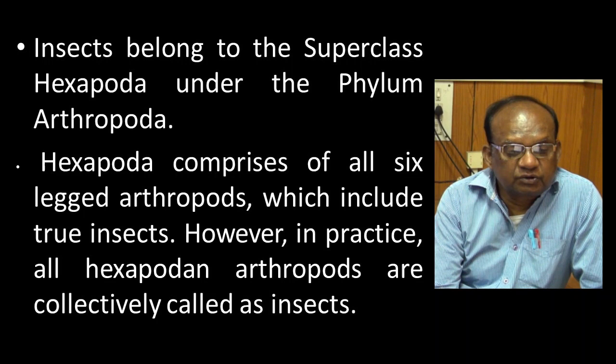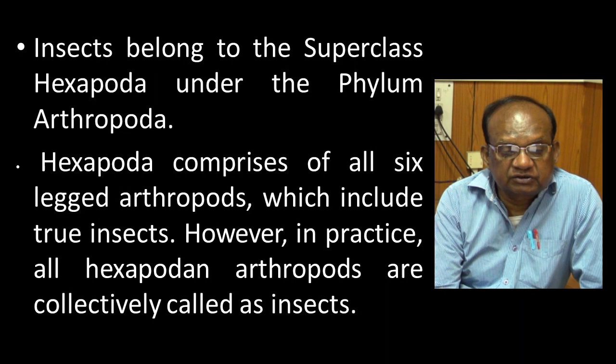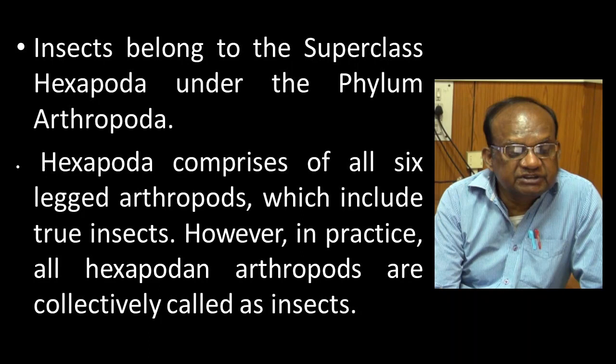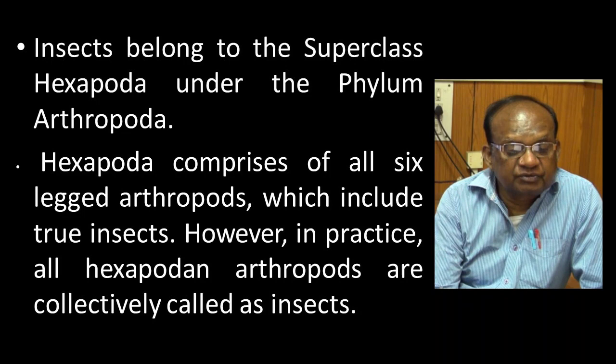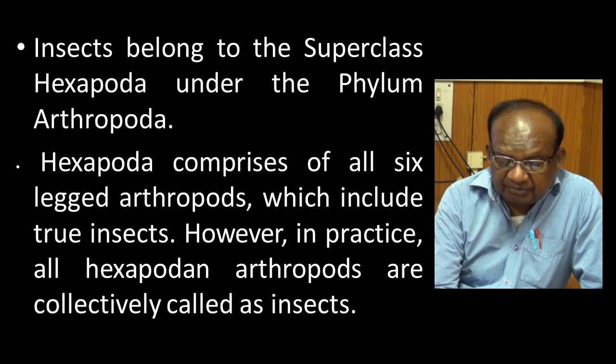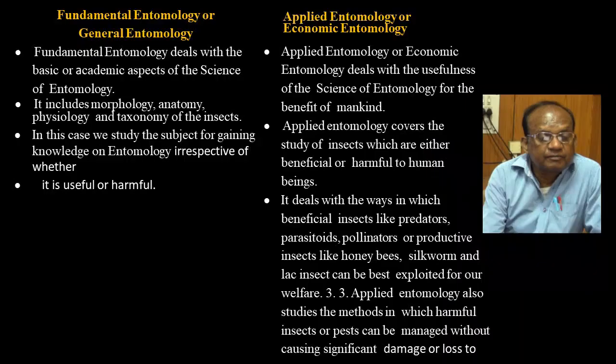Hexapoda comprises six-legged Arthropods, which include insects. In practice, all Hexapodan Arthropods are collectively called insects. 'Hexa' means Six, 'Poda' means Legs — that means six-legged organisms can simply be termed as insects. An organism having three pairs of legs can be said to be an insect.